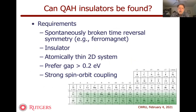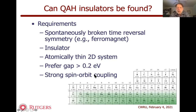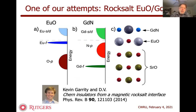Here's one paper from about seven years ago with my postdoc Kevin Garrity where we proposed a system based on first-principles calculations that should be a quantum anomalous Hall insulator. We have a substrate of strontium oxide — a simple rock salt insulator — and at the top surface one layer of europium oxide and one layer of gadolinium nitride. The europium F bands overlap with the gadolinium D bands in such a way that you get an avoided crossing. This is a plot of energy levels from the first-principles calculation versus wave vector in the two-dimensional Brillouin zone at the surface.